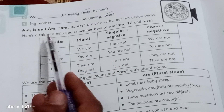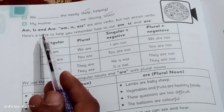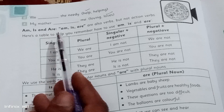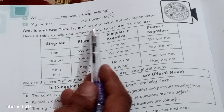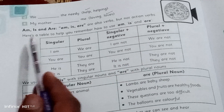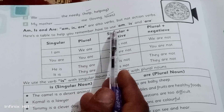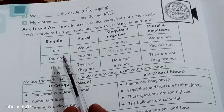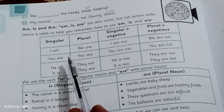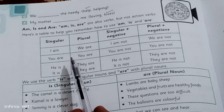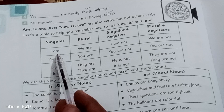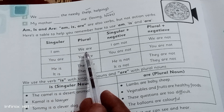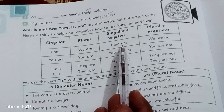Am, is, and are are also verbs but not action verbs. Here is a table to help you remember how to use them. With he, she, it, and a singular noun, we use 'is'. With I, we use 'am'. With you, we, they, and plural nouns, we use 'are'.